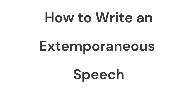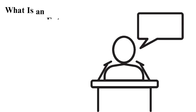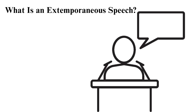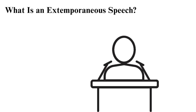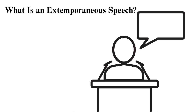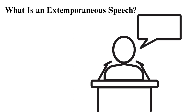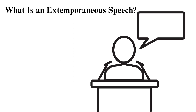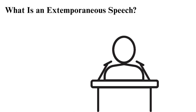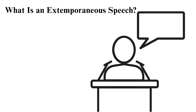How to write an extemporaneous speech. An extemporaneous speech is a type of speech whereby the speaker is supposed to prepare for it quickly and present it, usually in less than 30 minutes. Extemporaneous speaking is typical during speaking competitions or public events.